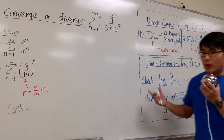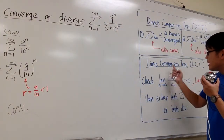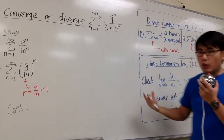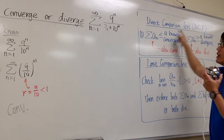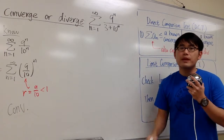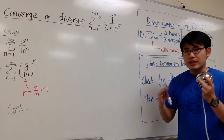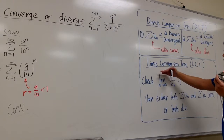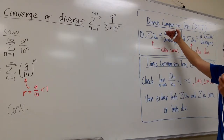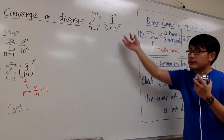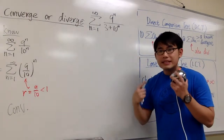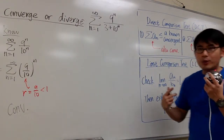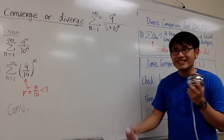In my previous video, we worked out the limit comparison test to show that this series converges, but we can also use the direct comparison test to do the same right here as well. It just depends on your preference whether you want to use the limit comparison test first or the direct comparison test first. Sometimes they both work, just like this situation, but sometimes only one of them works, and there will also be situations where none of them work.